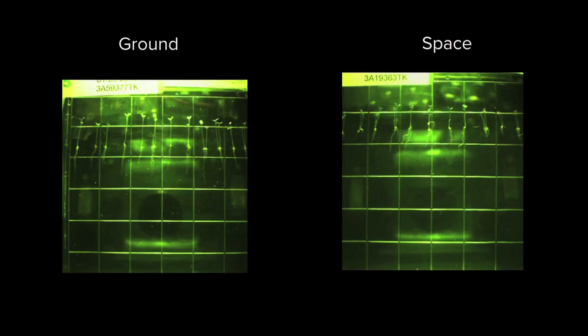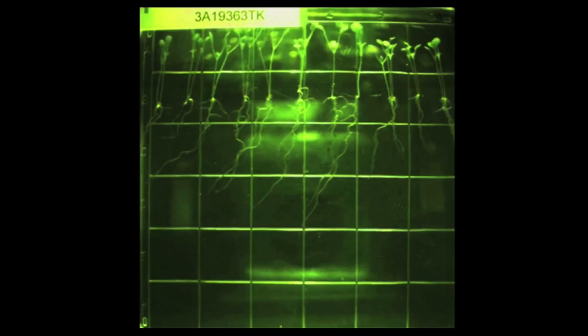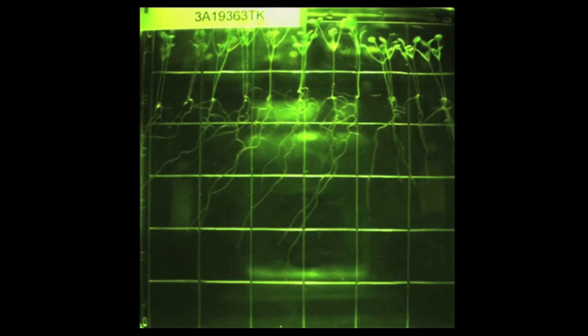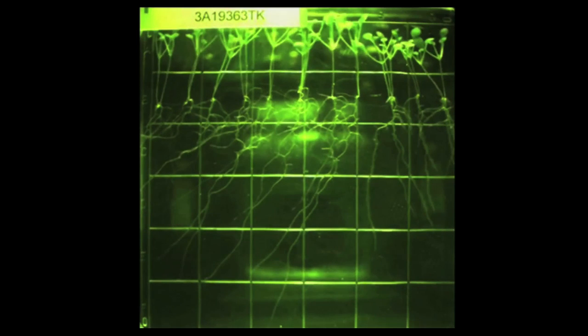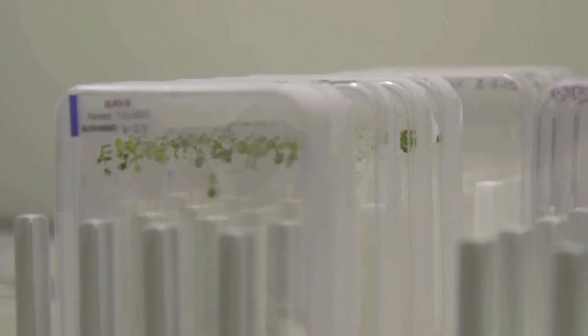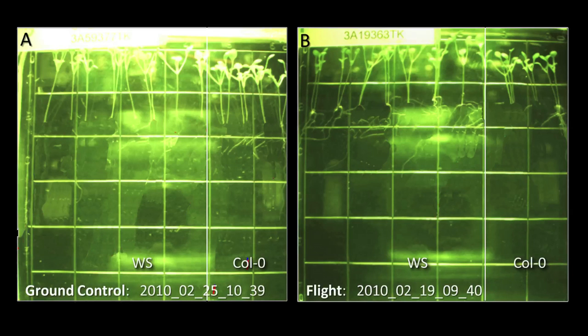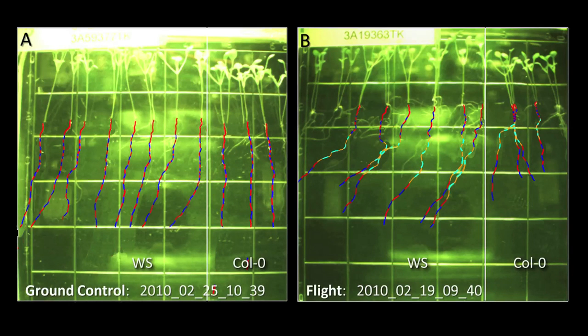But then, the Arabidopsis that were grown further from the light did something different. At about the five-day mark, they started to do this characteristic, what we call skewing, this kind of jog to the left. Since the times of Darwin in the 1800s, it's been understood that this angled growth of roots, this skewing, was due to gravity.